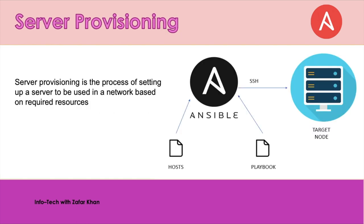Now, provisioning. There are a number of different types of provisioning: server provisioning, user provisioning, network provisioning, and service provisioning. Server provisioning is the process of setting up a server to be used in a network based on required resources. This diagram shows server provisioning — Ansible is connected with the target node via SSH, the playbook is written, and this is the host. Ansible uses the playbook and pushes the code to the target node.